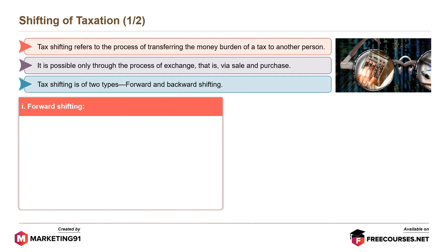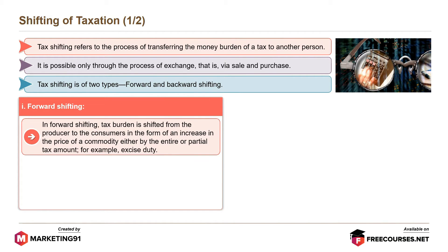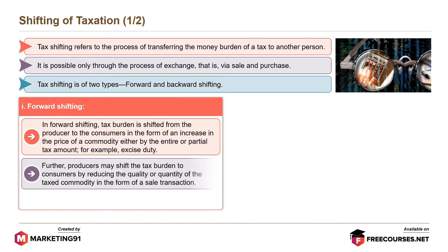Forward shifting: In forward shifting, the tax burden is shifted from the producer to the consumers in the form of an increase in the price of a commodity, either by the entire or partial tax amount — for example, excise duty. Further, producers may shift the tax burden to consumers by reducing the quality or quantity of the taxed commodity in the form of a sale transaction.